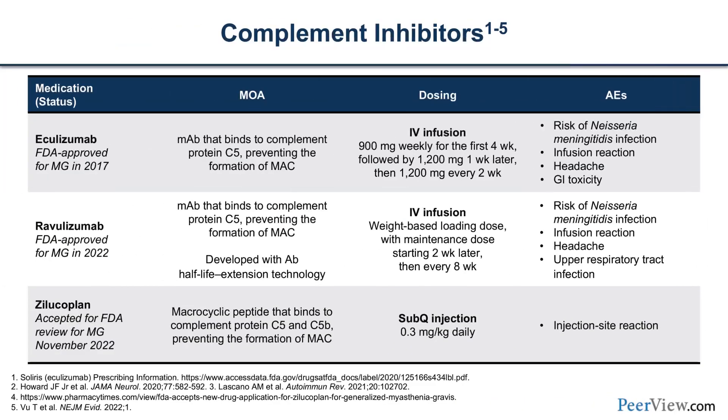By inhibiting the neonatal Fc receptor (FcRn), we can selectively clear IgG antibodies — rather than salvaging and recirculating them to the bloodstream, we can move them to the lysosome for destruction. Eculizumab was the first ever approved treatment for myasthenia gravis, in 2017 — remember, this disease was recognized in the mid-1600s. This monoclonal antibody binds the complement protein C5 and prevents the formation of C5a and C5b; C5b then combines with C6, C7, C8, and multiple copies of C9 to form the membrane attack complex.